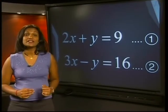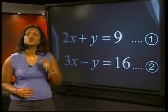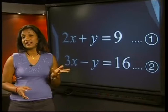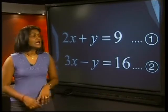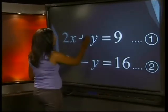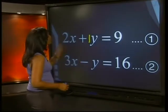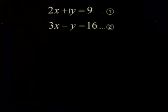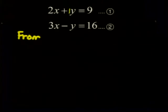Both equations are already simplified, so we can now choose one of them to use by getting either the x or y by itself. In the first equation, the coefficient of y is 1, so we'll choose equation 1 to start off with. Now y is equal to 9 minus 2x.